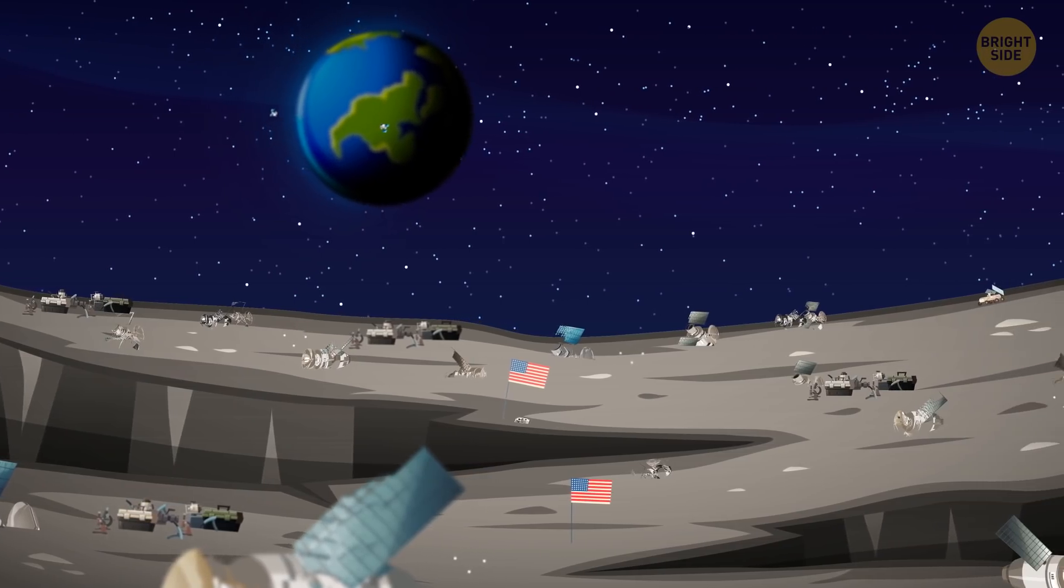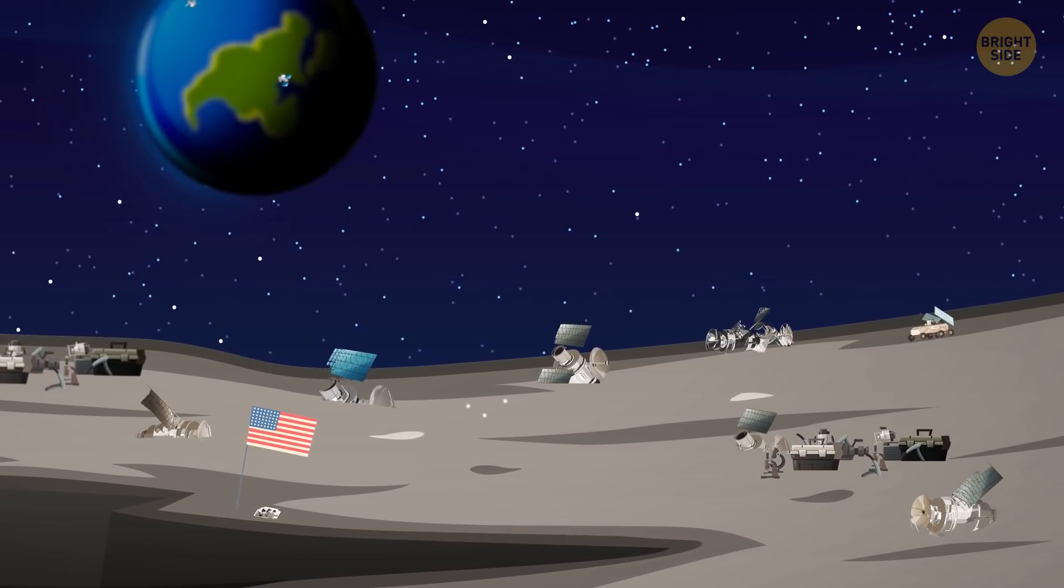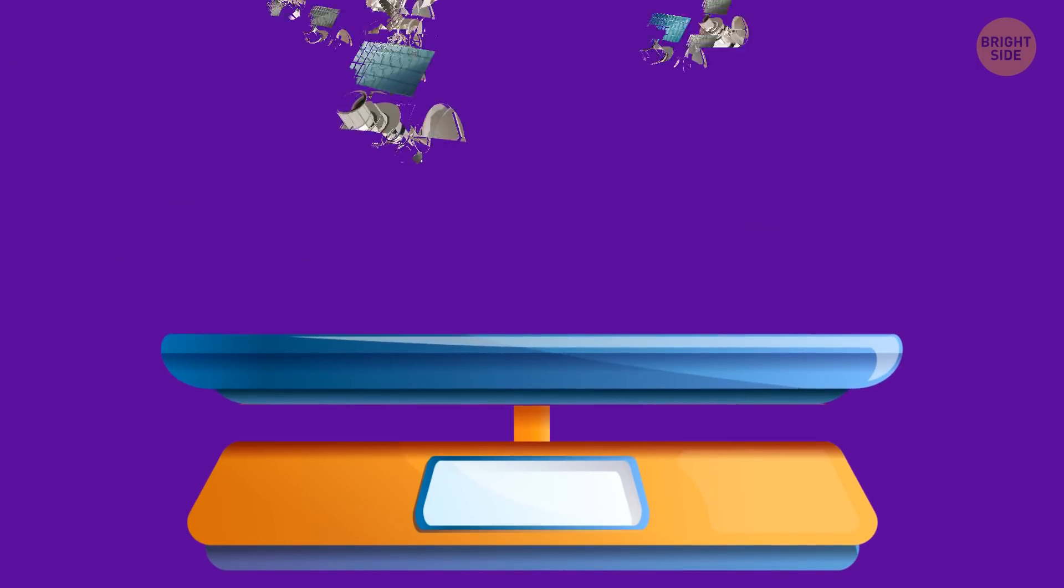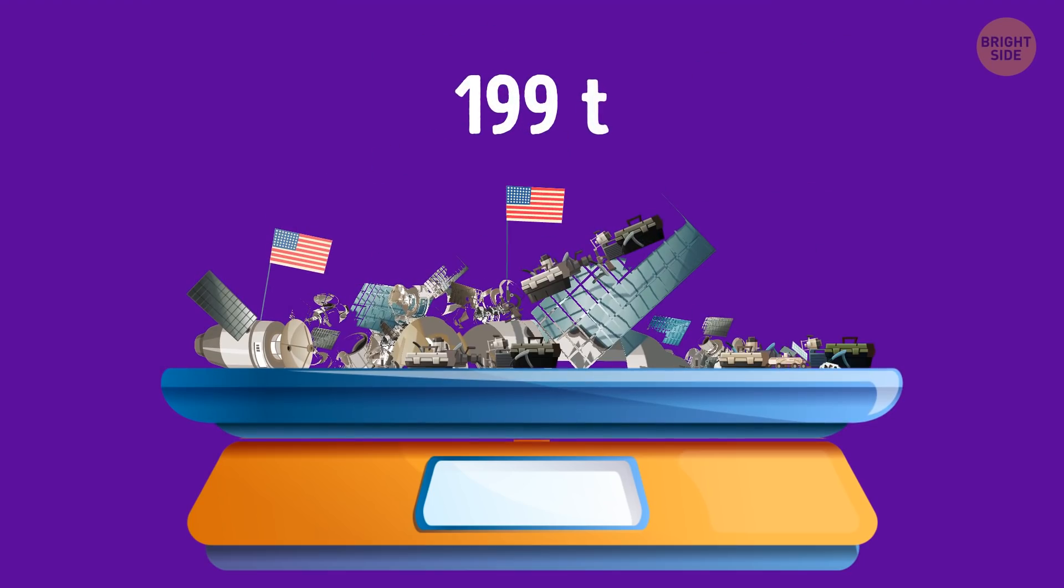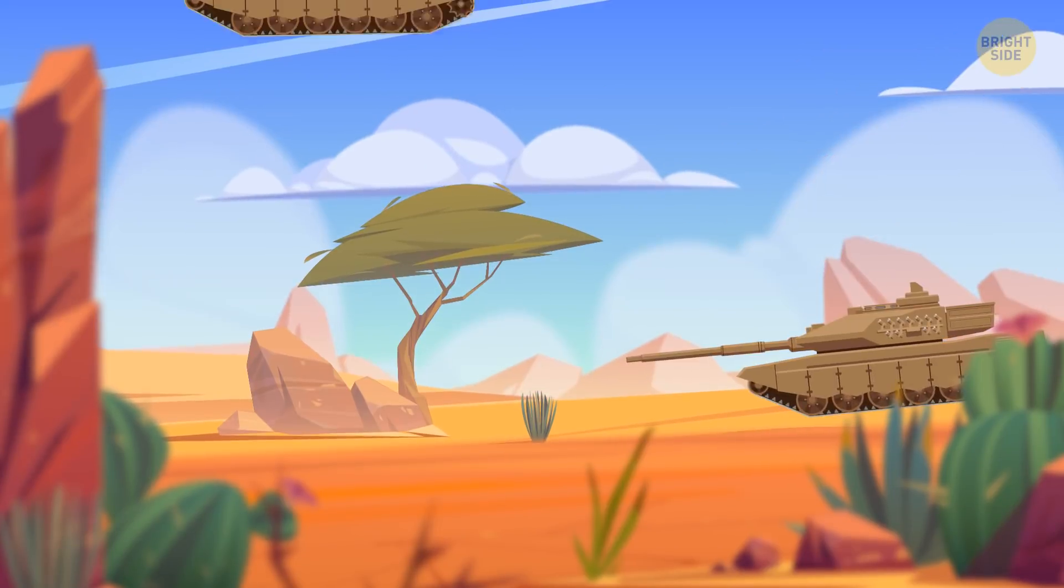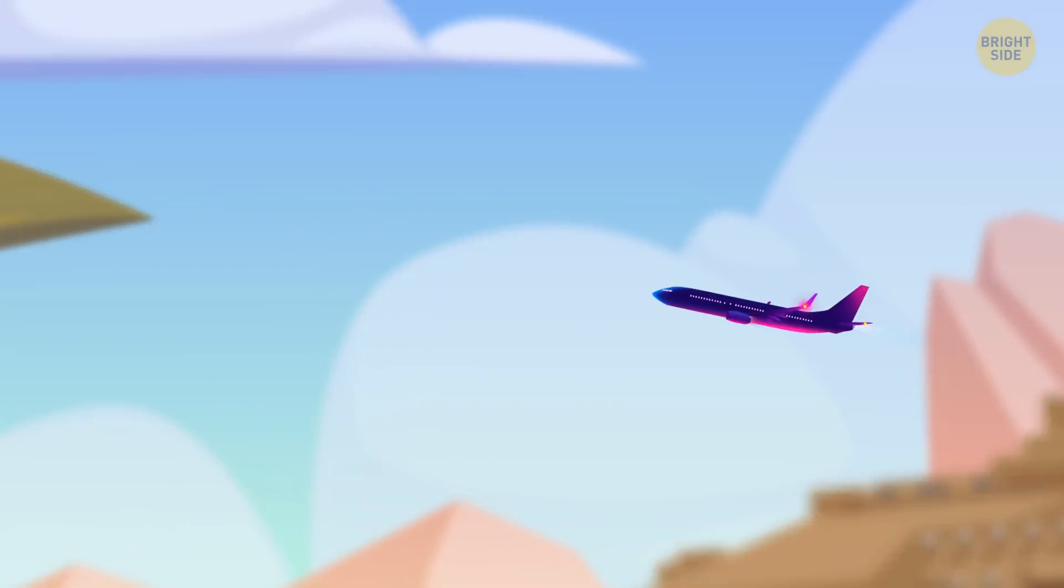If you collect all these objects and debris that we left there by 12 astronauts and put them on the scales, it will show about 199 tons. It's like three heavy armored tanks or three large passenger planes. Strange, but true.